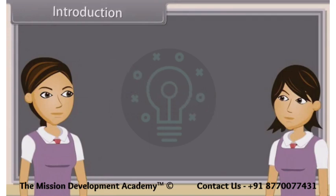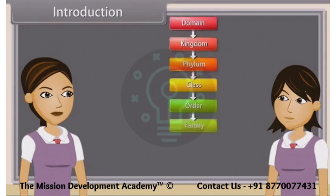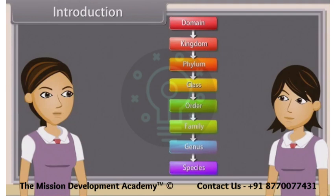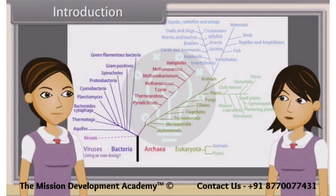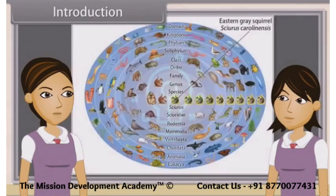Biological classification, or scientific classification in biology, is a method by which biologists group and categorize organisms by biological type, such as genus or species. Modern biological classification has its roots in the work of Carolus Linnaeus, who grouped species according to shared physical characteristics. These groupings have since been revised to improve consistency with the Darwinian principle of common descent.